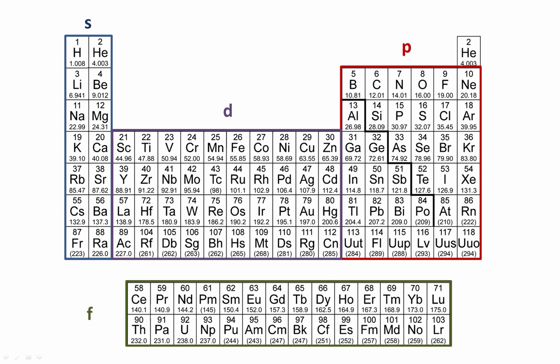According to our rules for quantum numbers, the s-block begins when n equals 1, and we can continue numbering down for the rows. Our p-block begins when n equals 2. Our d-block begins when n equals 3, and our f-block begins when n equals 4.